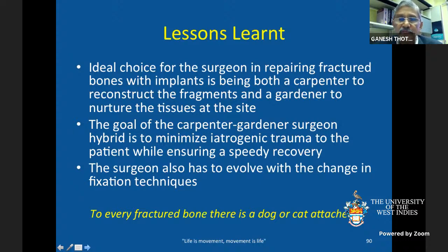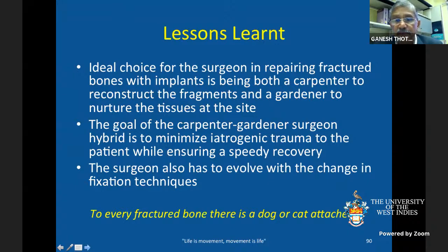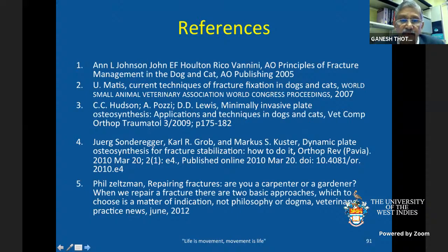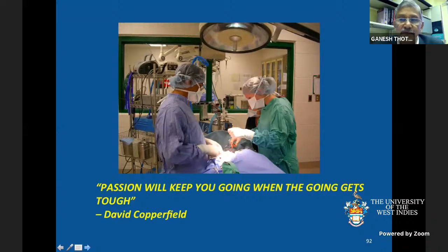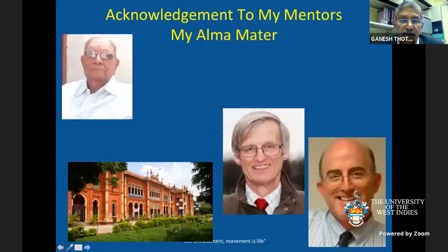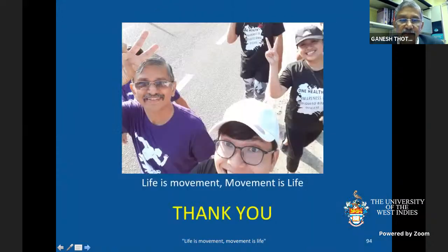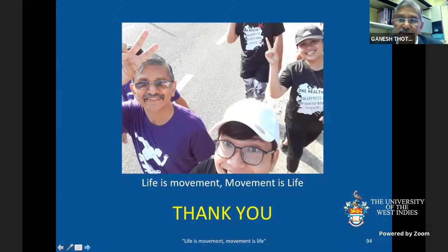The lessons learned over recent decades: the ideal choice for the surgeon is to be both a carpenter — reconstructing the fragments — and a gardener — nurturing the tissues at the fracture site. The goal of this hybrid carpenter-gardener surgeon is to minimize iatrogenic trauma while ensuring speedy recovery. The surgeon must also evolve with constant changes in fixation techniques, new implants, and new designs, continuously reviewing new concepts and adapting new methods and principles to benefit patients.